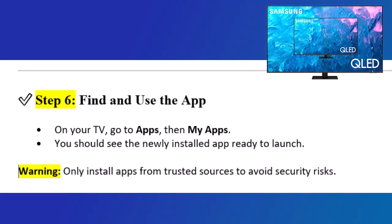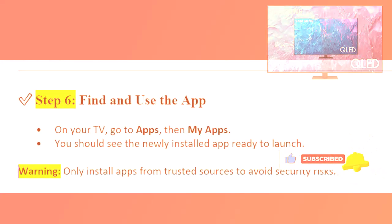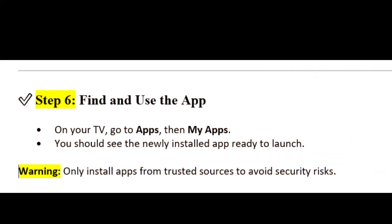Step 6: Find and use the app. On your TV, go to Apps, then My Apps, and you should see the newly installed app ready to launch. Only install apps from trusted sources to avoid security risks. Thanks for watching — if you found this video helpful, please like and subscribe for more Smart TV tips and tricks.